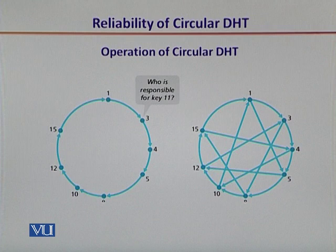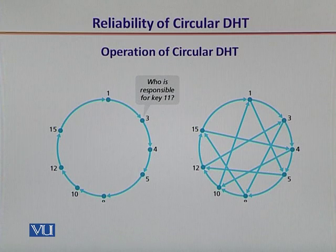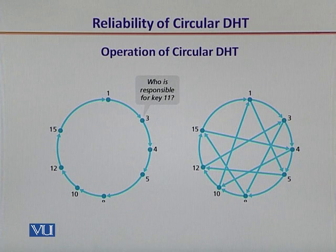The operation of circular DHT can be best described by looking at the circle. On the left hand side, you can see that peer 3 sends out a request for key number 11. The arrangement is circular, so 3 is the immediate neighbor to 1 and to 4. Since key 11 is closer in integer value to 4, it is passed on to 4. In this overall configuration, peer number 12 is closest in integer to the requested key, so 12 is going to respond with the content.